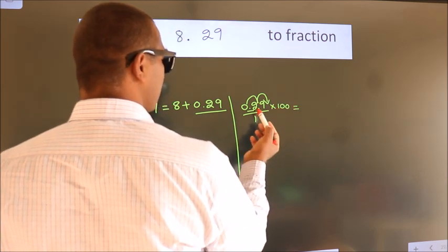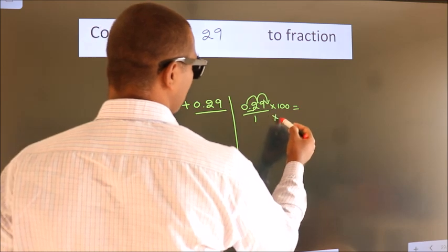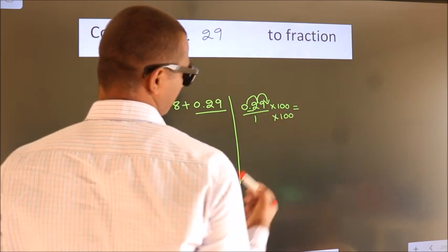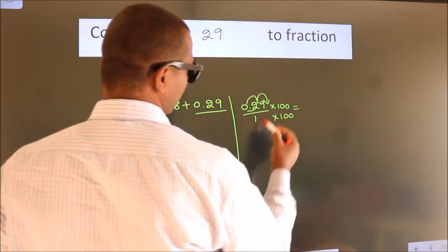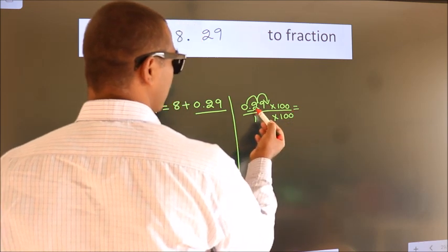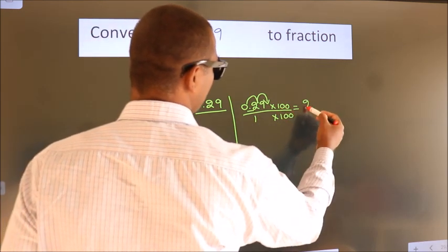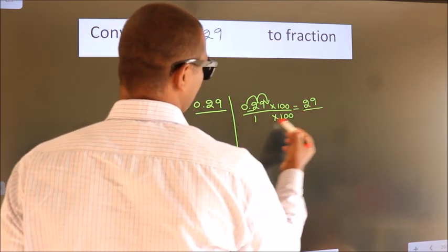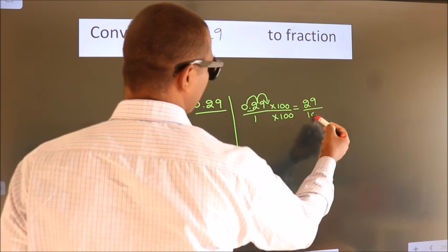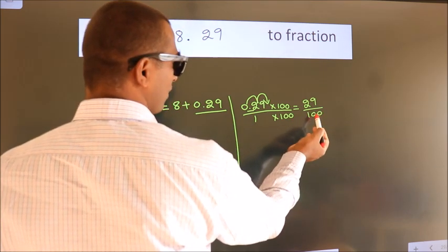Whatever we are multiplying in the numerator, in the denominator also do the same. Next, 0.29 into 100 is 29. 1 into 100 is 100. This is the fraction we got.